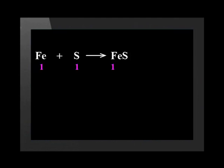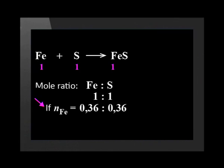The ratio of iron to sulfur is 1 to 1. This means that for every 1 mole of iron that reacts, 1 mole of sulfur will be required. We calculated that we had 0.36 moles of iron to start with. Let us use the mole ratio to determine how many moles of sulfur would be required to react completely with the iron.